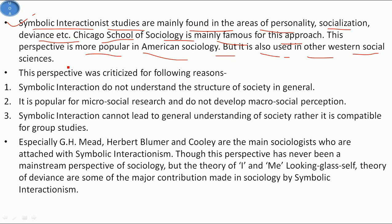The core idea of symbolic interactionism can be traced back to C.H. Cooley's theory of the looking-glass self, but it was later developed by Herbert Blumer and G.H. Mead. Blumer presented an organized body of symbolic interactionism as a perspective, while G.H. Mead in his theory of I and Me took it to the next level, representing how self develops in society through signs and symbols. Later, sociologists like Erving Goffman also carried their study through this perspective.